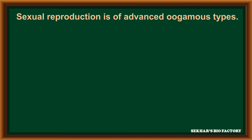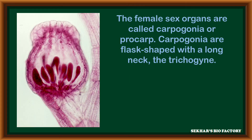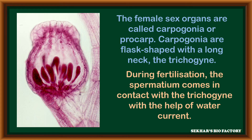In Rhodophyta members, sexual reproduction takes place with the help of an advanced oogamous type. In this, the male sex organs are called spermatangium. A single non-flagellate male gamete is produced in each spermatangium; such male gametes are called spermatium. The female sex organs are called carpogonium or procarp. This carpogonium is flask-shaped with a long neck called the trichogyne. During fertilization, the spermatium comes in contact with the trichogyne, that is the entry point, with the help of water current.